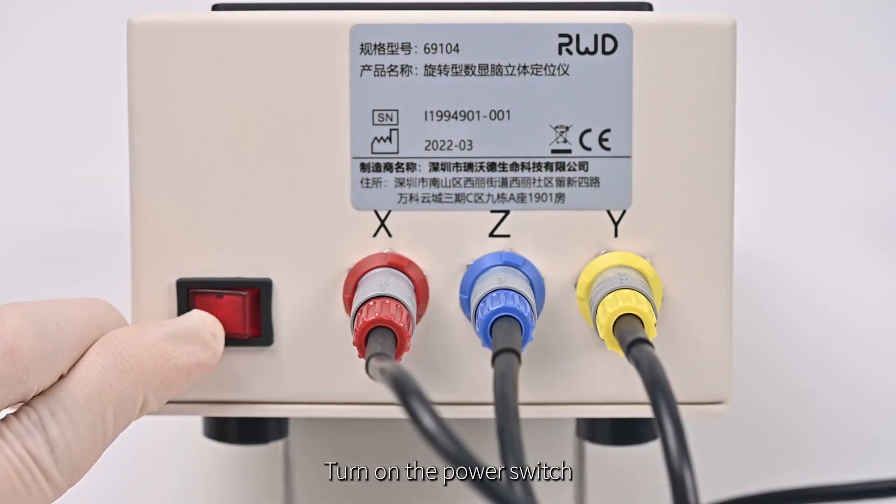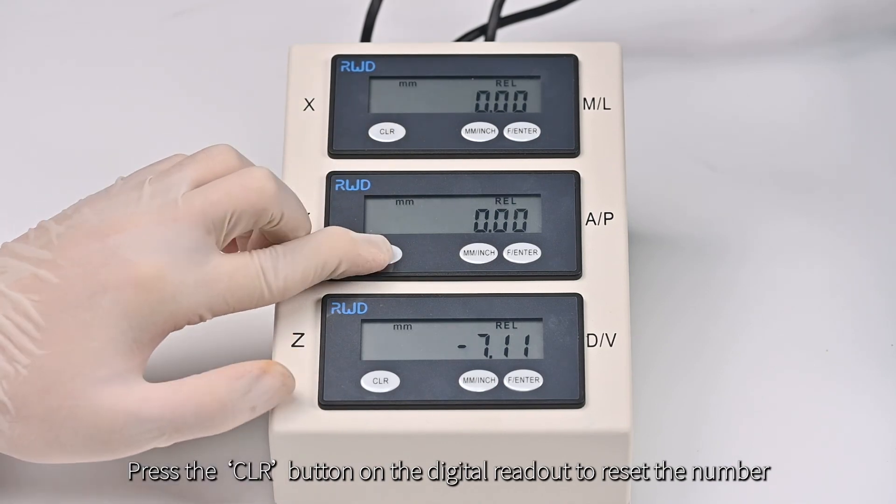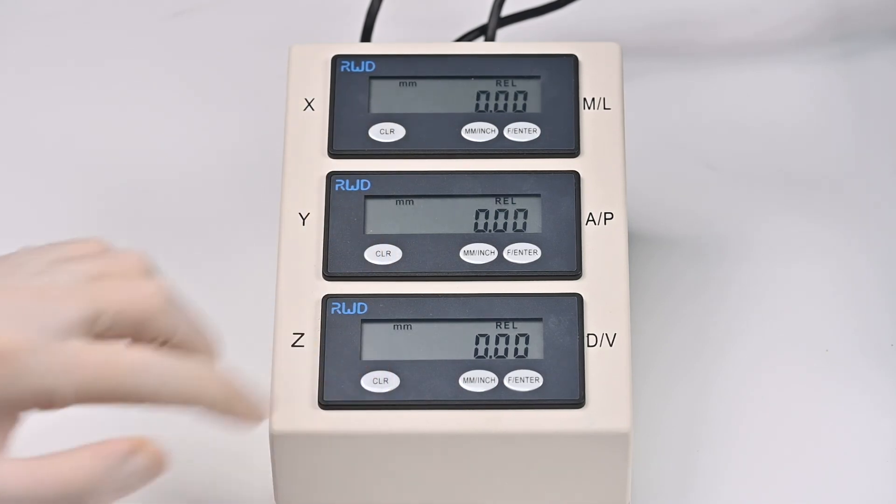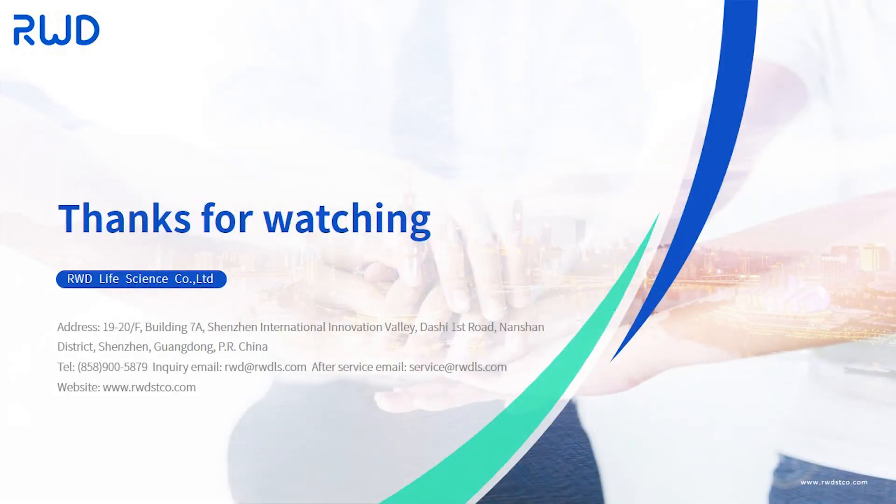Turn on the power switch. Press the clear button on the digital readout to reset the number. Please refer to the provided user manual for more details. Thanks for watching.